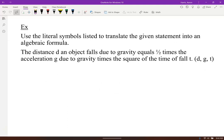Use literal symbols listed to translate the given statement into an algebraic formula. The distance an object falls due to gravity. So I have my distance d equals one-half times the acceleration which they call g, that's our acceleration due to gravity,